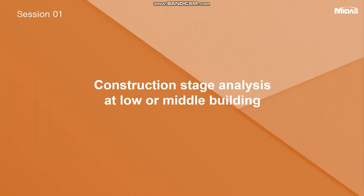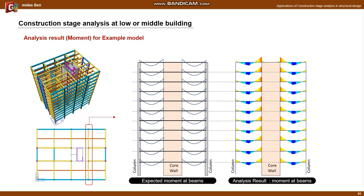First, I will introduce the elastic construction stage analysis in the design of low- and mid-rise buildings. Let's check the analysis results of the example model with 10 stories. In the example model, the core wall is located inside, and the outside is composed of an RC frame.